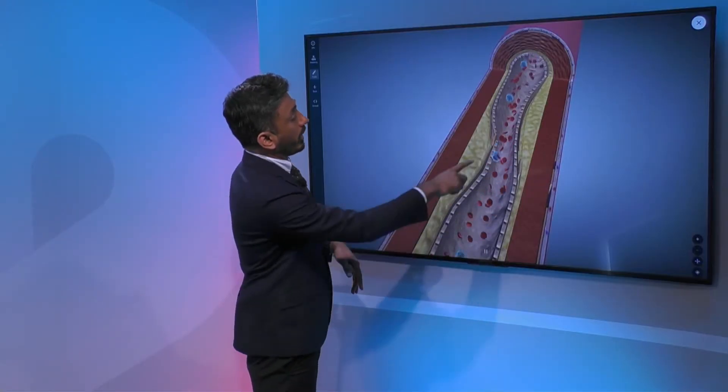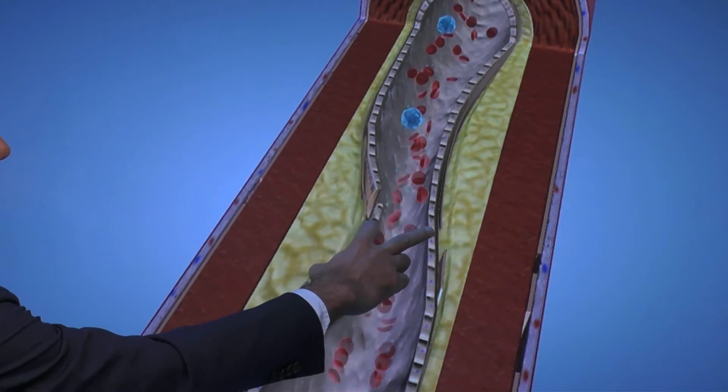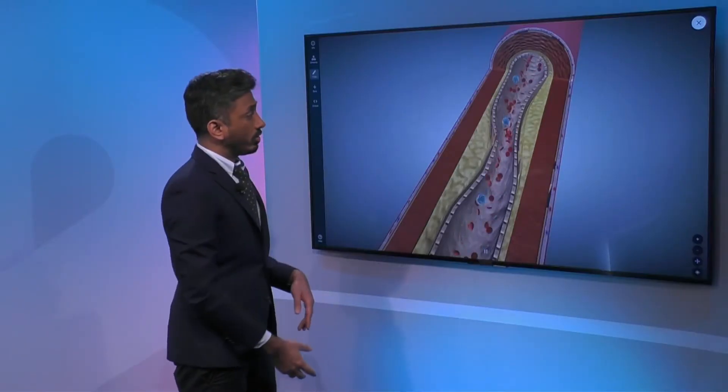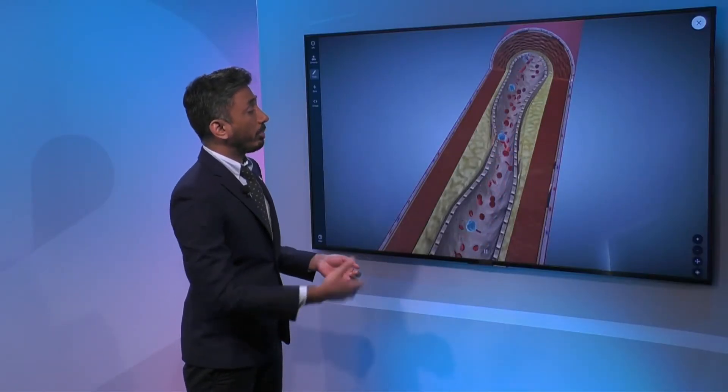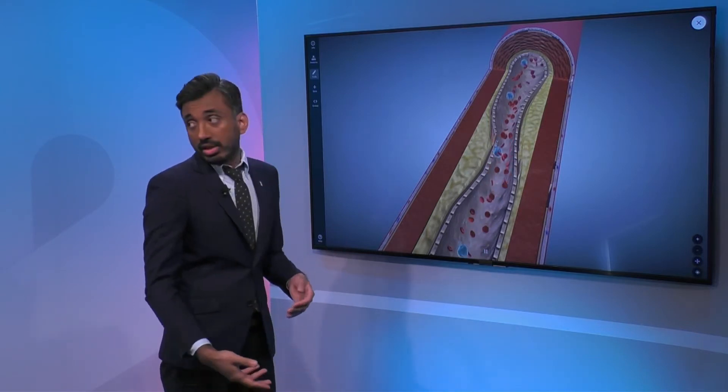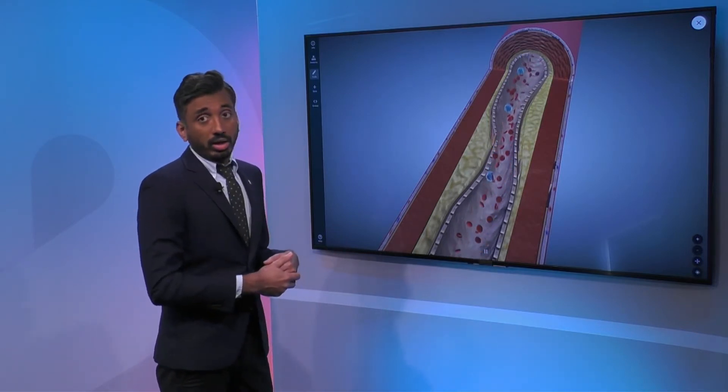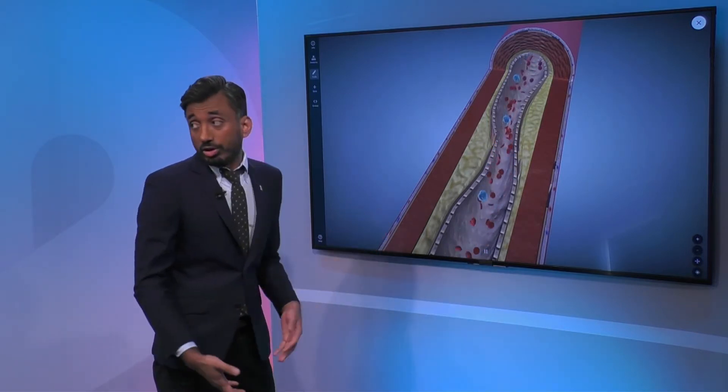Now in this particular image, are we seeing signs of PAD? We are seeing the narrowing of the lumen of the blood vessel, and depending on how narrow it is, it can lead to impediment of blood flow to the arteries.